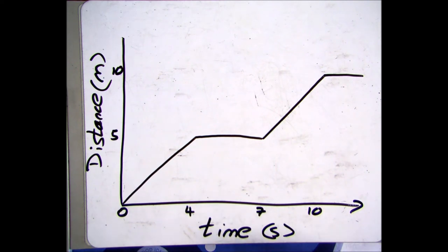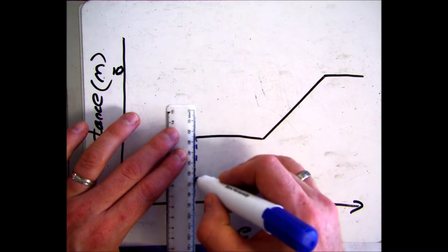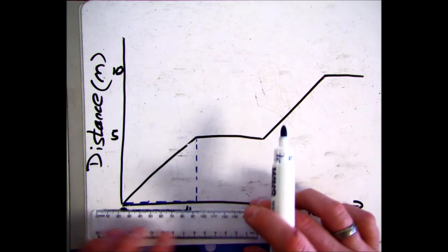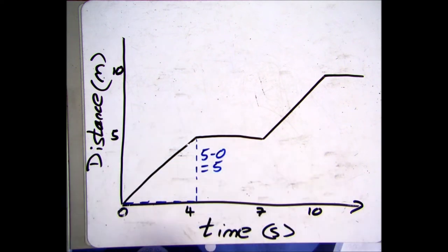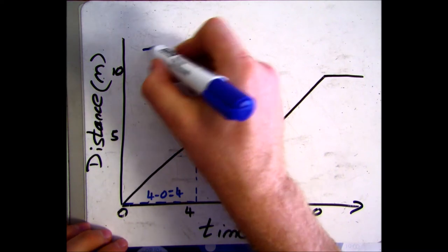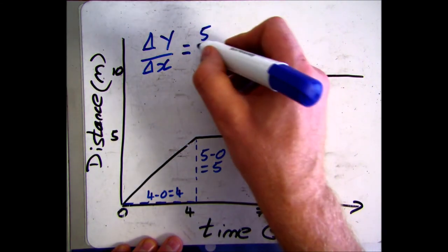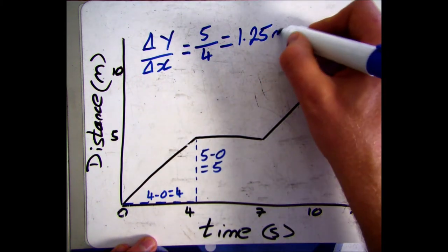Let's look at an example of calculating speed from the gradient when the object is travelling at a steady speed. Here we have four clear sections with sections of steady and constant speed. To find the gradient, we calculate how much the y-axis changes divided by how much the x-axis changes. For the first section, y ended at 5 metres and started at 0, and x ended at 4 seconds and started at 0. So the change in y is 5, the change in x is 4, and 5 divided by 4 gives us 1.25 metres per second.